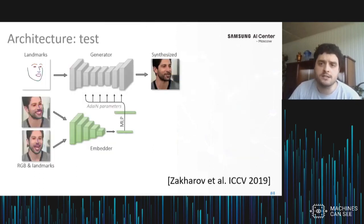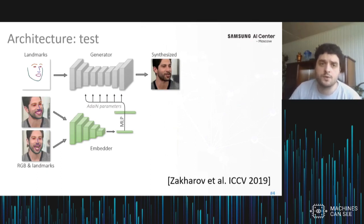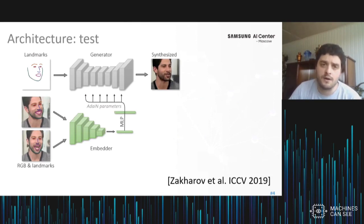Under the hood, we had an architecture where an embedder network was trained in parallel with the generator network. The embedder network would look at one or several photographs of a person and map each photograph to an embedding space. If we have multiple photographs, we average those vectors. The embedding vector was then used to condition the generation process. The generator maps the rasterized landmarks to the image of the avatar, and the embedding vector is used to rescale and bias the activations inside the generator to inject person-specific information.